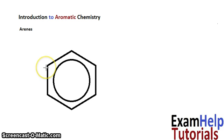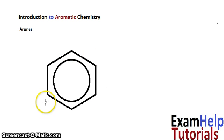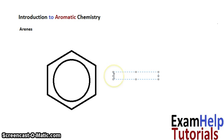So basically in a benzene ring, each carbon — and there's a carbon at each position around the ring — will be attached to one hydrogen atom. So the formula, therefore, for benzene is C6H6.